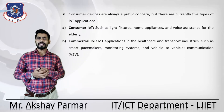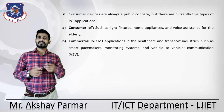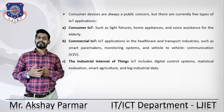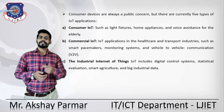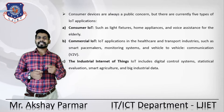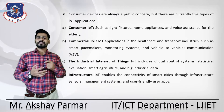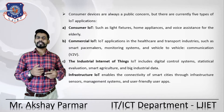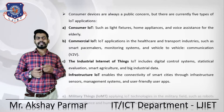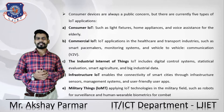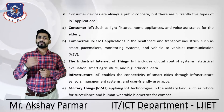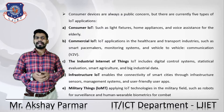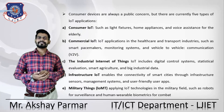The second type is Commercial IoT — applications in healthcare and transport, such as smart pacemakers, monitoring systems, and vehicle-to-vehicle communication. The third is Industrial IoT, which includes digital control systems, smart agriculture, and big industrial data. The fourth is Infrastructure IoT, which enables connectivity of smart cities through infrastructure sensors, management systems, and user-friendly apps. The fifth is Military of Things, applying IoT in military fields such as robots for surveillance and human wearable biometric devices in combat.